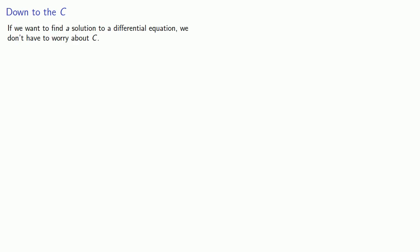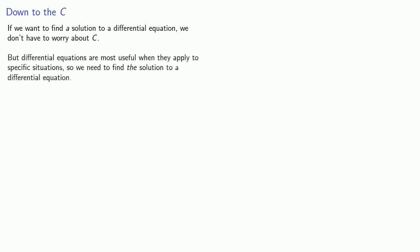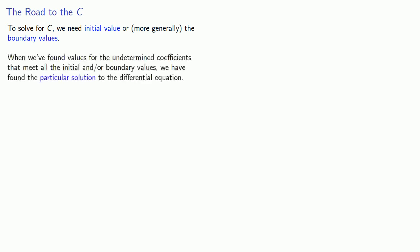Our solution is y of t equals c1 e to the power of t, where we do have that undetermined constant. If we want to find a solution to a differential equation, we need to make sure the undetermined constant is actually there. Differential equations are most useful when applied to specific situations, so we need to find the particular solution — which requires finding the values of the undetermined constants using initial values or, more generally, boundary values.